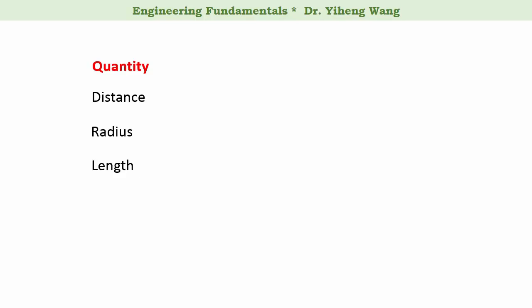During engineering problem solving, we might use symbols to represent these quantities, so we don't have to write the words all the time. D for distance, R for radius, and L for length are all common symbols.